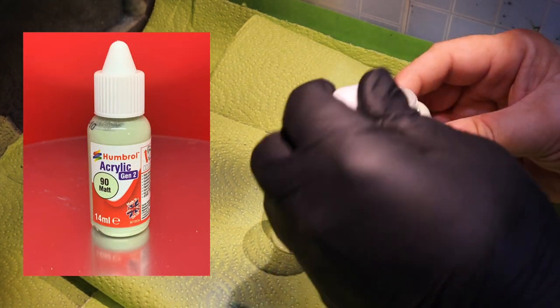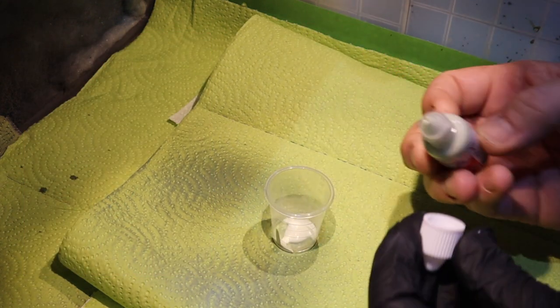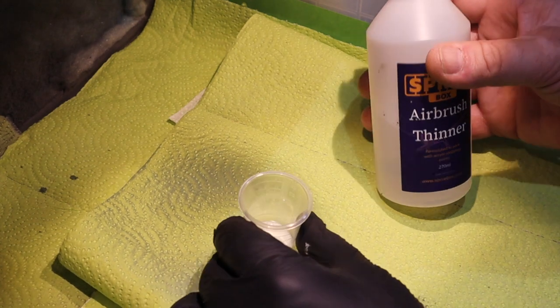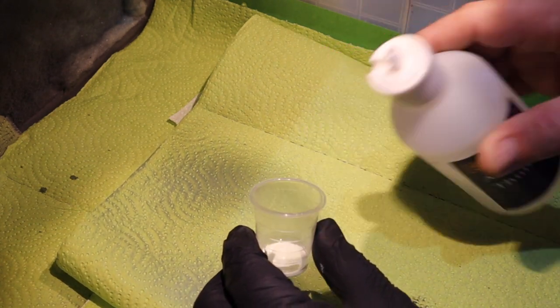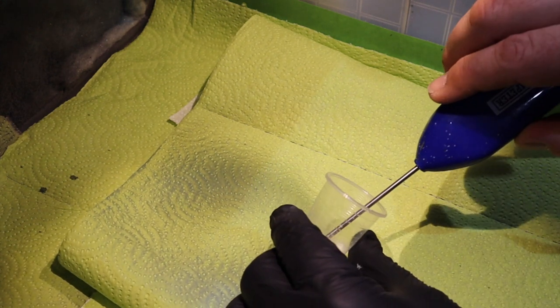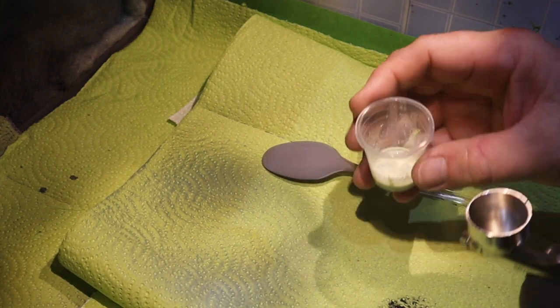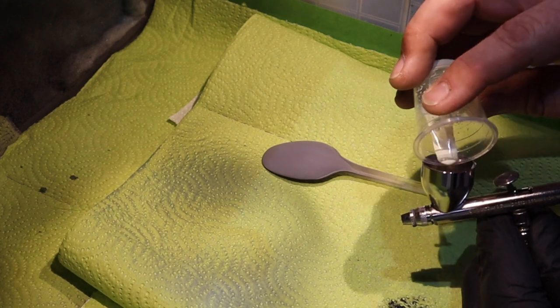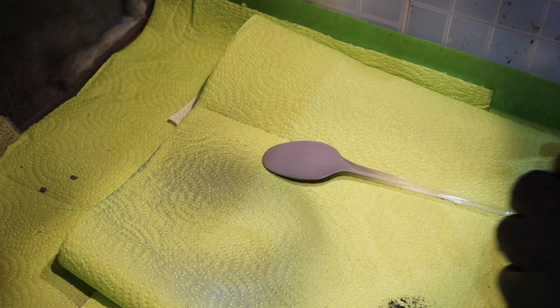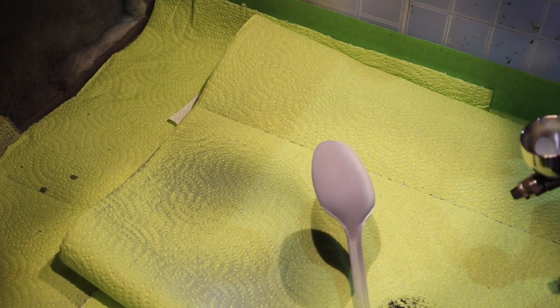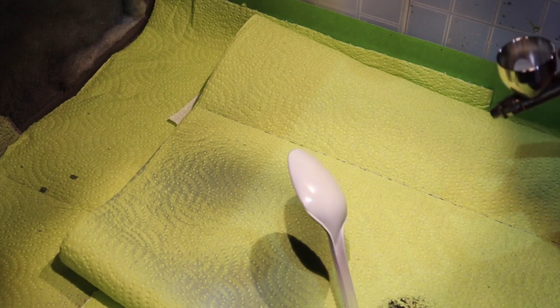So on to our next candidate, which is 90 matte of the Gen 2 range. So far, I'm quite impressed with the paints, to be honest. I certainly think there's a definite improvement from their original acrylic range. Although I have used them, some of them I found to be a bit lumpy, a bit problematic, but so far everything I'm using is working like a dream. So we're going to pour the paint into the airbrush and give this another go.